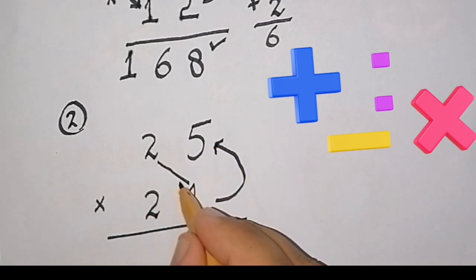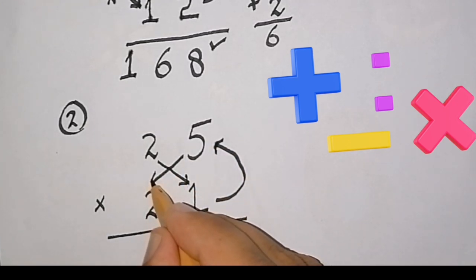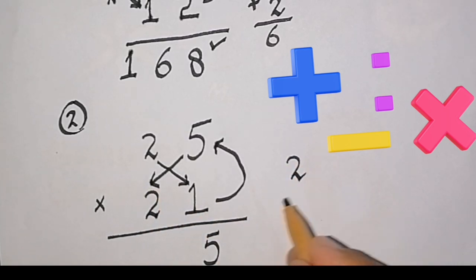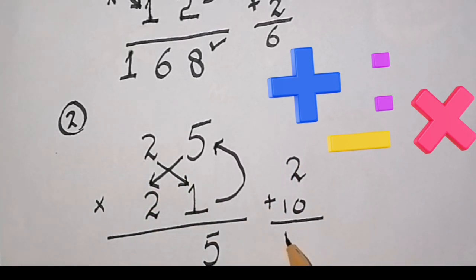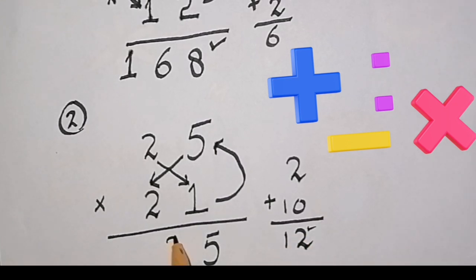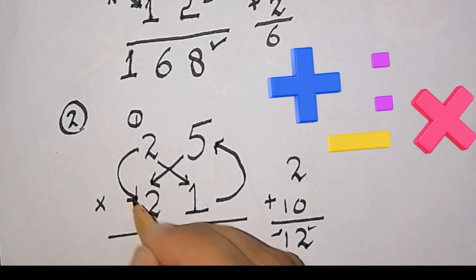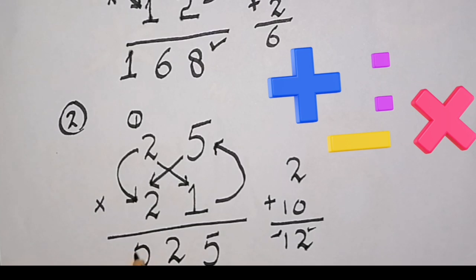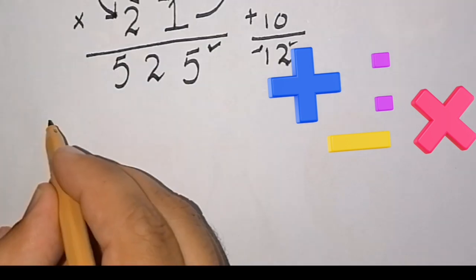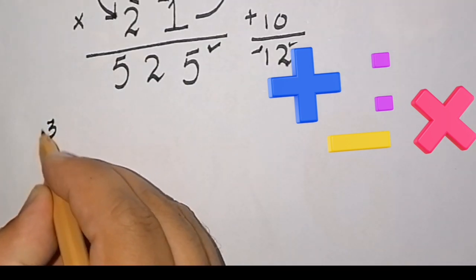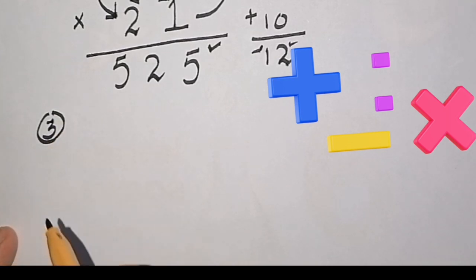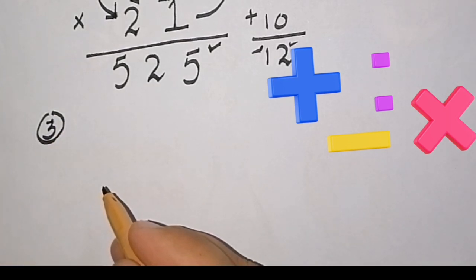Cross multiply the two digits: 2 times 1 is 2, and 5 times 2 is 10. 10 and 2 gives us 12. We will write 2 here and carry 1. So 2 multiply 2 is 4, and add 1, that is 5. The answer is 525.